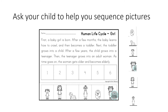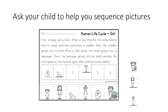First, a baby girl is born. After a few months, the baby learns how to crawl, and then becomes a toddler. Next, the toddler grows into a child. After a few years, the child grows into a teenager.